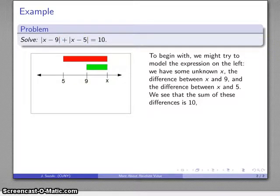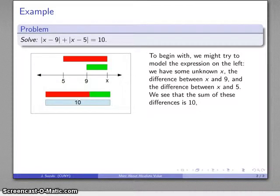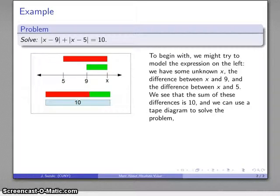What I want to do is my equation tells me that if I put those two differences together, what I get is 10. So let's go ahead and put those two together. I have red plus green gives me 10. Now we have a nice simple equation that I can solve using a tape diagram.